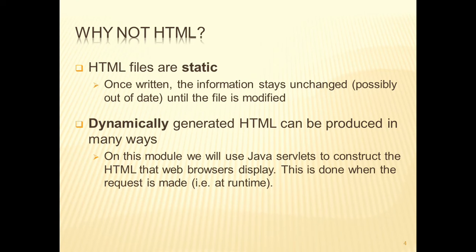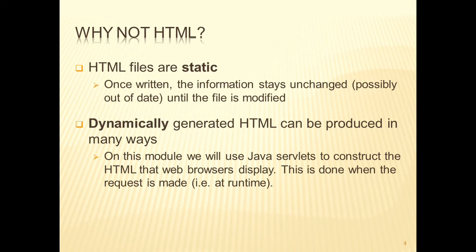What we want instead is to have something that is dynamically generated, and we can dynamically generate HTML in all kinds of ways. On this module we shall use servlets and then later on Java Server Pages to dynamically generate HTML. When we say dynamically, what we mean is the HTML is constructed at the time of execution and then is written back to the web browser for the client to see. The web browser does not know whether the HTML came from a static HTML file or from a Java servlet — as far as the web browser is concerned it asked for a file and it got HTML back in reply, and so it will display whatever it gets.